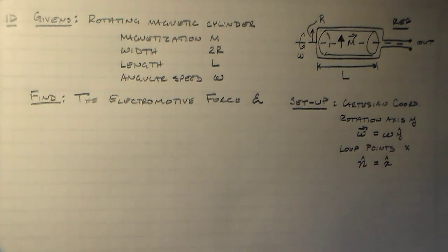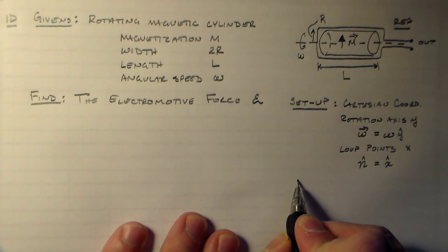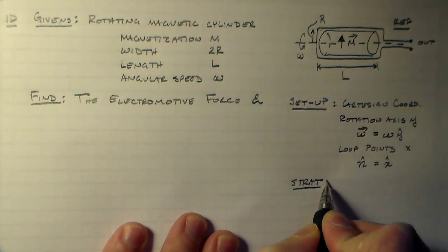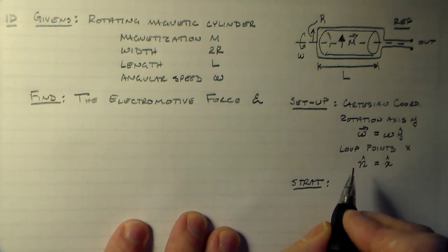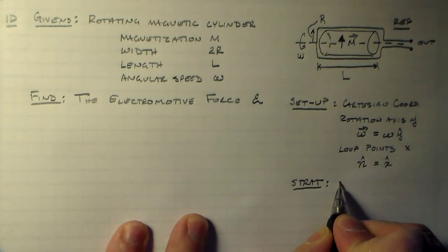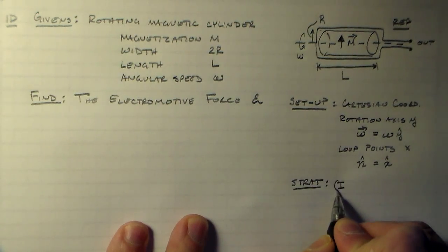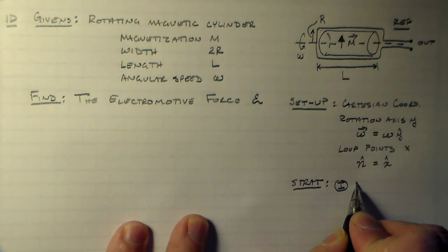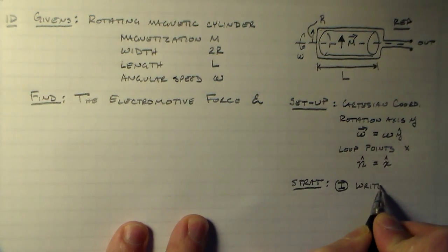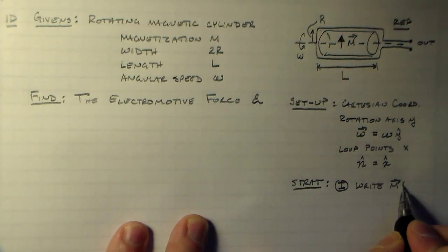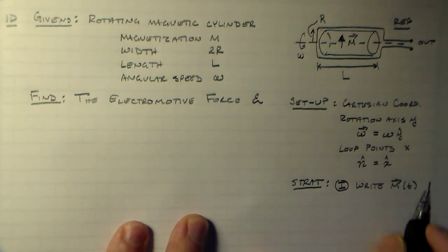So that's our setup. All we need now is a strategy. Once we have a strategy, we can solve everything and be happy and go on our merry way. So what sort of things are we going to need here? We're going to need to write an expression for m, the magnetization vector quantity as a function of time.